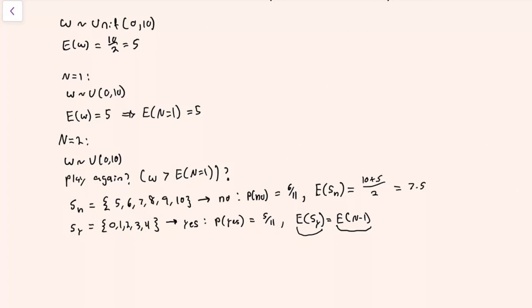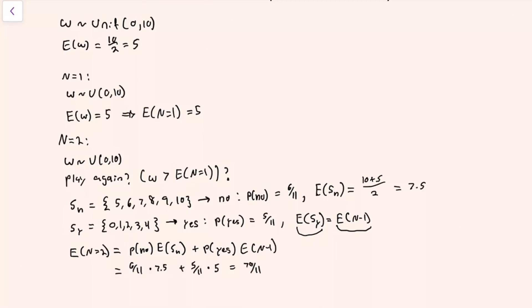The expected value of this game overall when we have two rounds available is: the probability we choose to end the game on this round times the expected value when we stop, plus the probability we choose to play another round times the expected value of the game with one fewer round. Plugging in the numbers, that ends up being 70 elevenths, which I'll break down into 6 plus 4 elevenths.